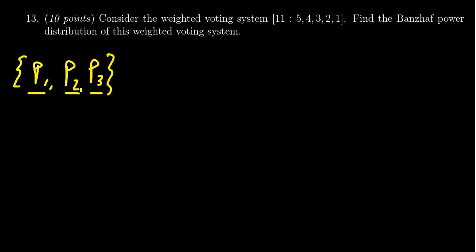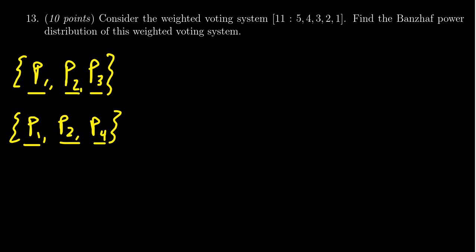You could also get away with 5, 4, and 2 — that adds up to be 11. So you could do player 1, player 2, and player 4. Since the total weight is exactly 11, again each of the players in that situation are critical.